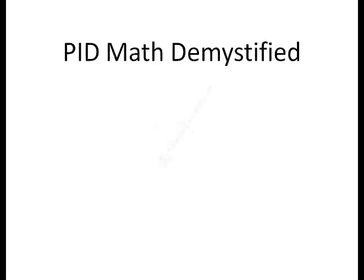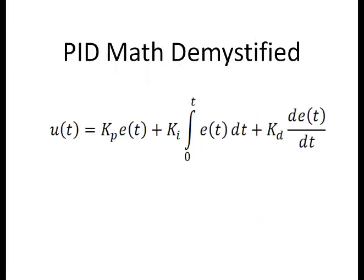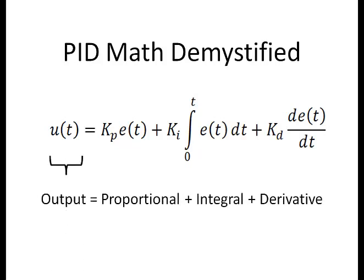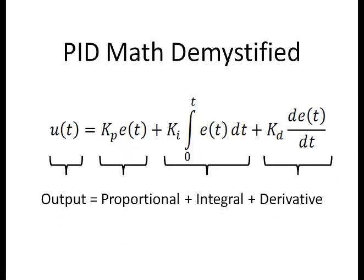PID Math Demystified. Most process control engineers have been exposed to the basic equation in a form that looks something like this — pretty scary, but let's break it down into smaller components. Output is equal to the proportional plus the integral plus the derivative components. In an industrial controller, you may have a combination of some or all of the components, so let's start with the simplest component first: the proportional only controller.